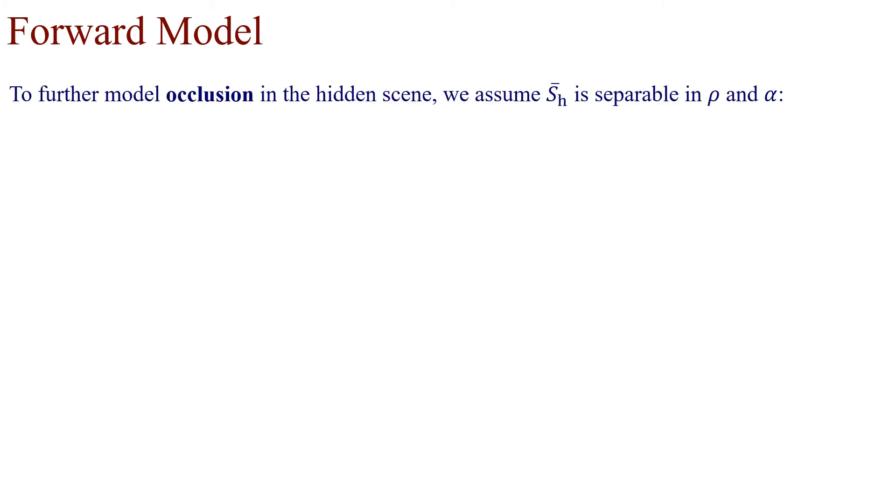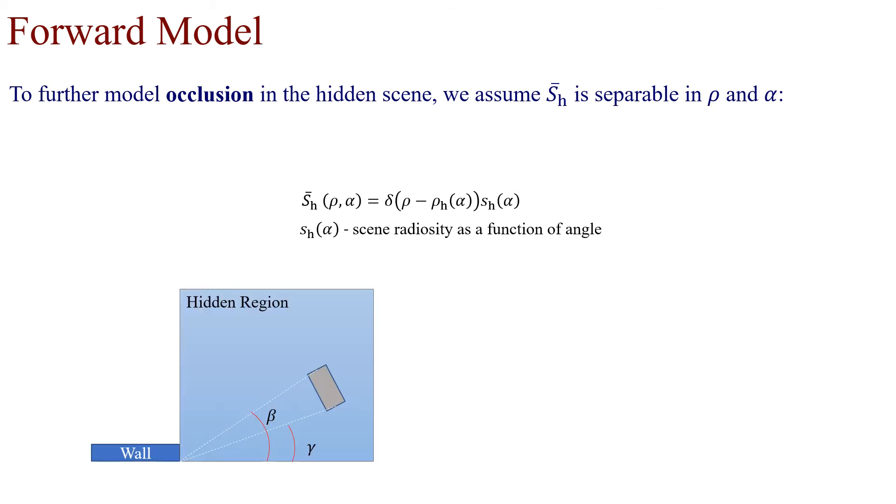In order to further model occlusion in the hidden scene, we assume SH bar is separable in range and angle. Here delta is the Dirac impulse function. SH alpha is the 1D scene radiosity as a function of angle. So for a hidden scene that looks like this, SH alpha would look something like this.